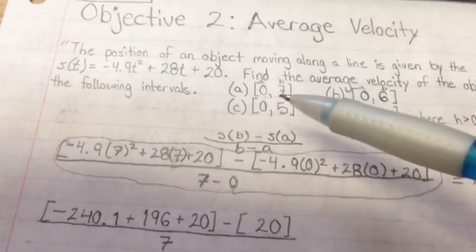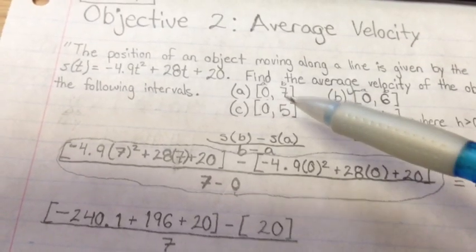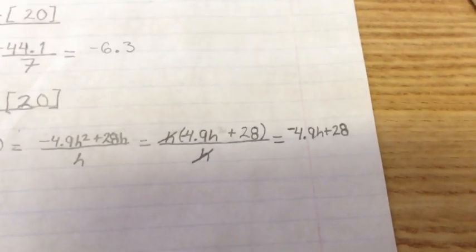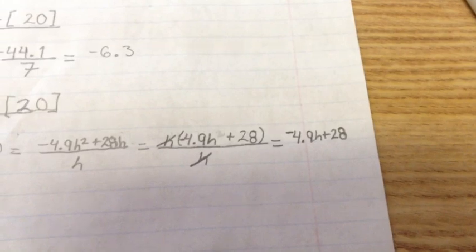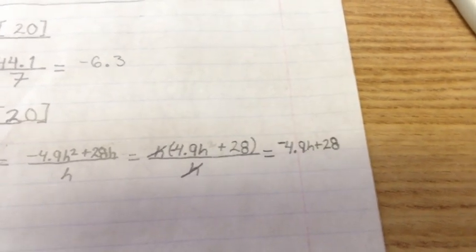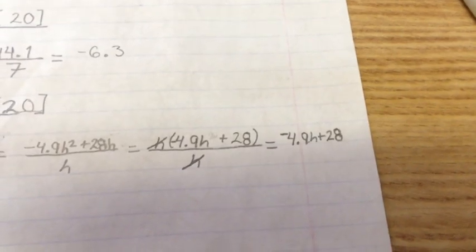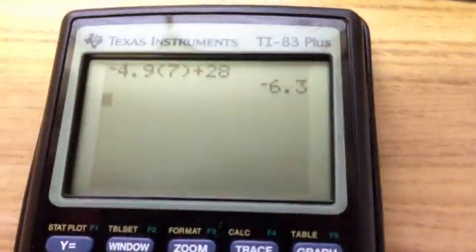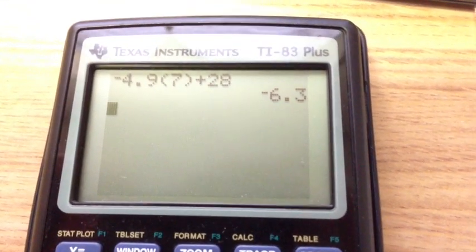And so if we plug in those same intervals, 7 for h, we can go ahead and type that in on the calculator. -4.9(7) + 28, there you go, is equal to -6.3.